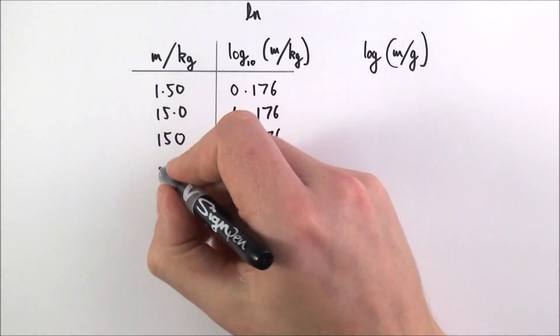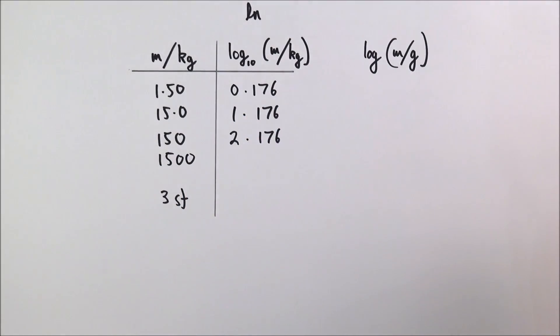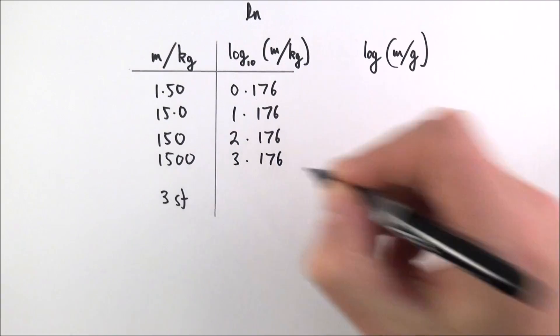My next question is: if we had a value maybe 10 times as big, the value for this should be exactly 3.176.